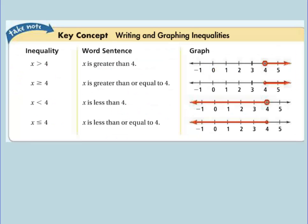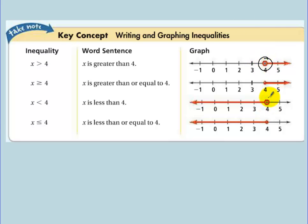Here's a table on inequalities, straight from the book. We've got four of them: greater than, greater than or equal to, less than, and less than or equal to. The word sentences are right here, and here's how to graph. One thing to notice is when you have less than or greater than, you do an open circle at the dot — these open circles are at the four.